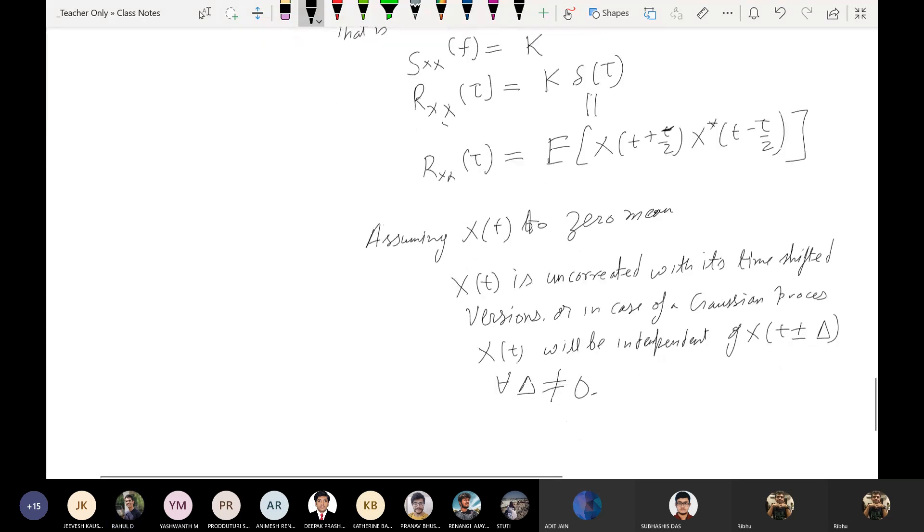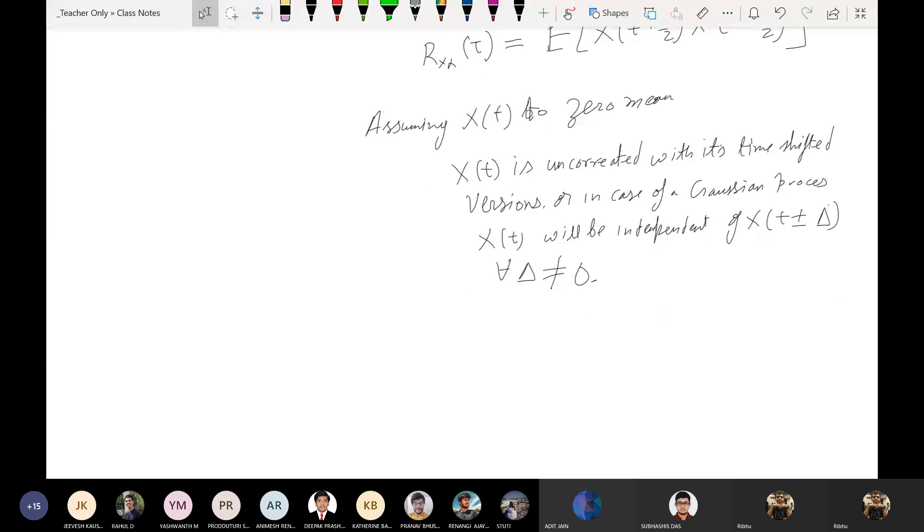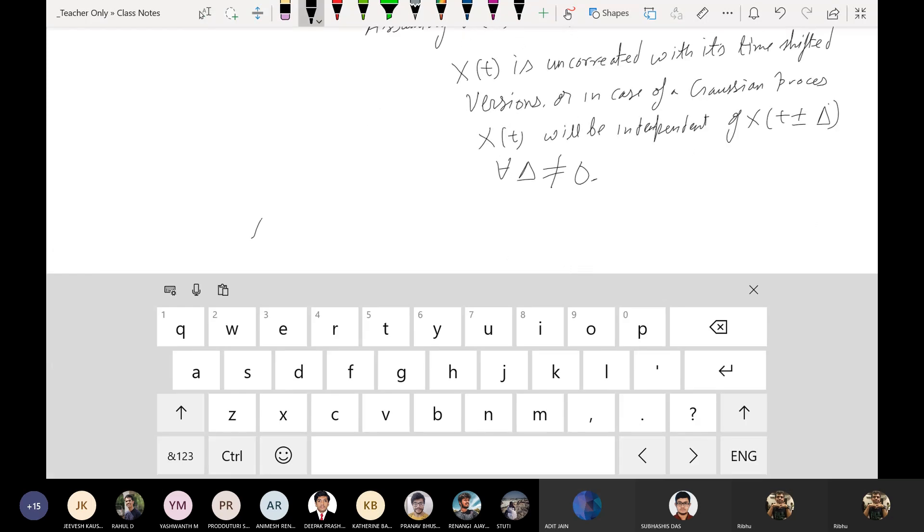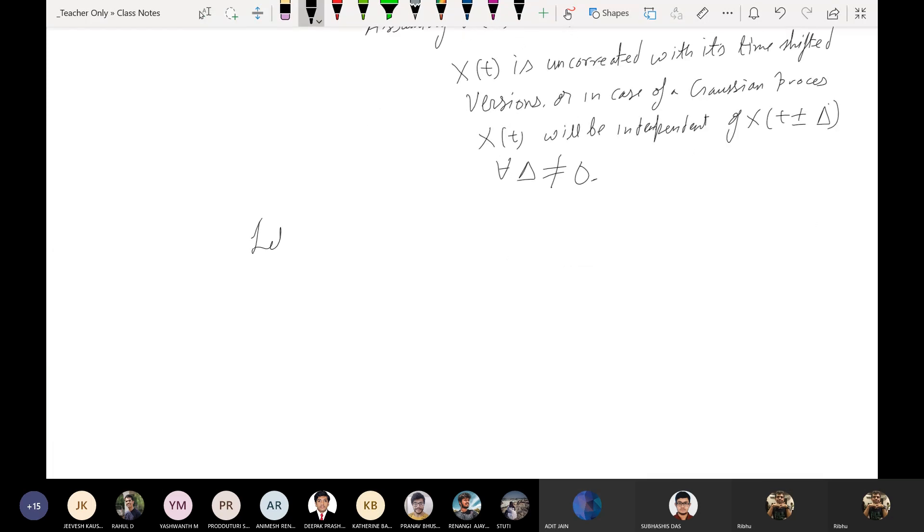We'll stop at a dramatic point because obviously we don't have the time to start something new right now. Let x(t) be a wide sense stationary zero mean white Gaussian process.